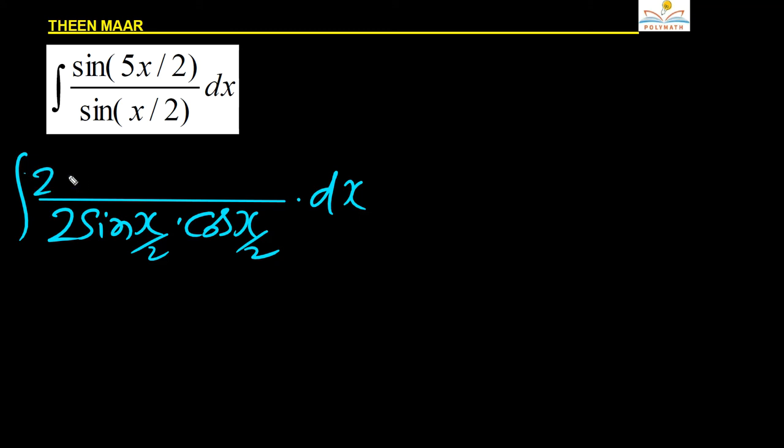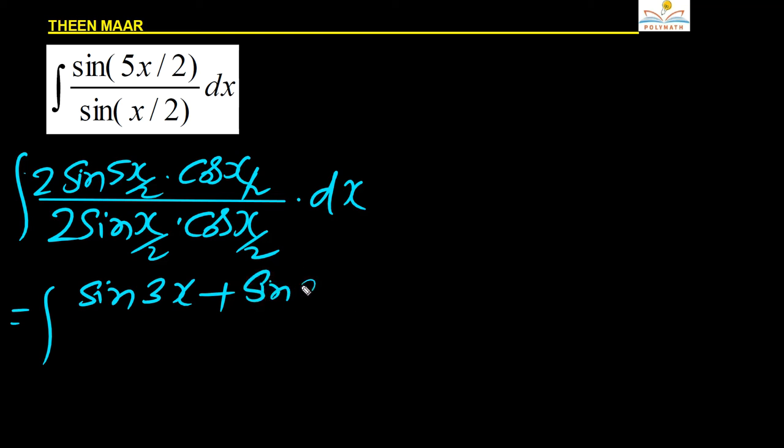So the numerator becomes 2 sin(5x/2) into cos(x/2). Now if you see the numerator this is nothing but 2 sin a cos b which is sin(a+b) plus sin(a-b). That is sin of 5x plus x, sin 3x plus sin a minus b means sin 2x and whole divided by sin x is the denominator 2 sin a cos a.